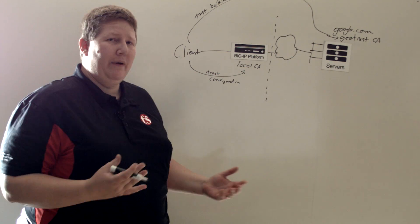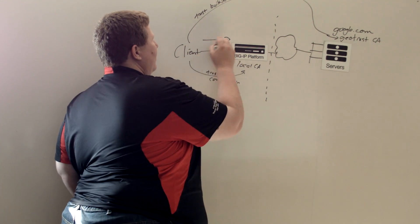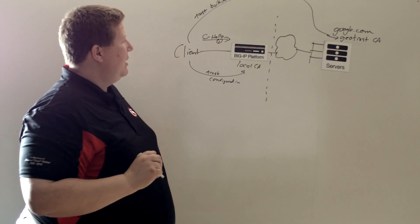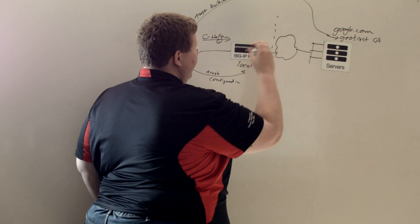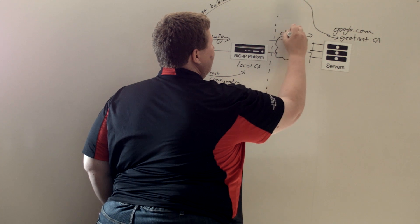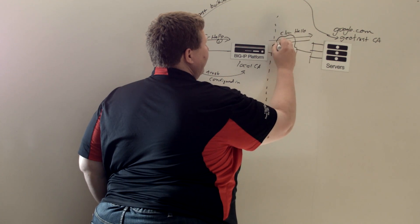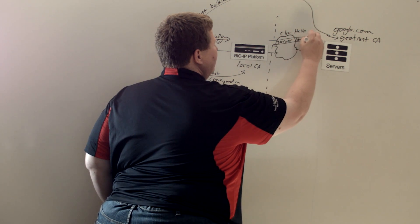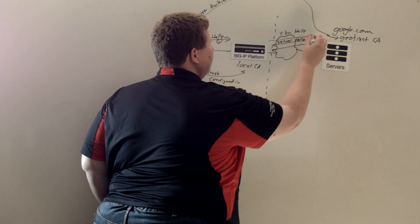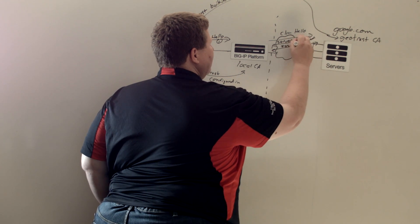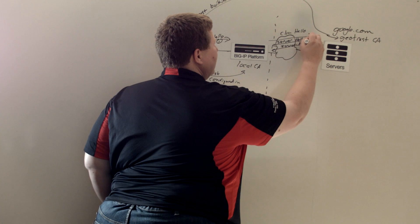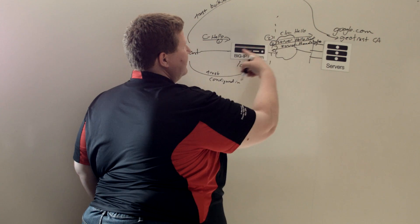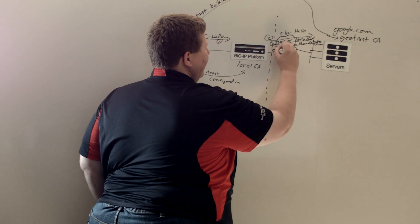So how SSL Forward proxy works: you have a client hello that comes in, and that's step one. Then your BIG-IP will pass on that client hello. And then you get the server hello and cert back. And then the server handshake happens. So this is step two — the server hello and cert coming back — and then the server handshake is done.